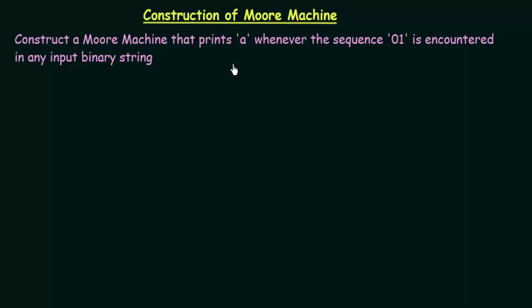What is the main difference between a Mealy machine and a Moore machine? In a Moore machine, the output is associated with the states. In the case of a Mealy machine, the outputs were associated with the inputs. But in Moore machine, the outputs are associated with the states. We will get it clear when we solve this example.